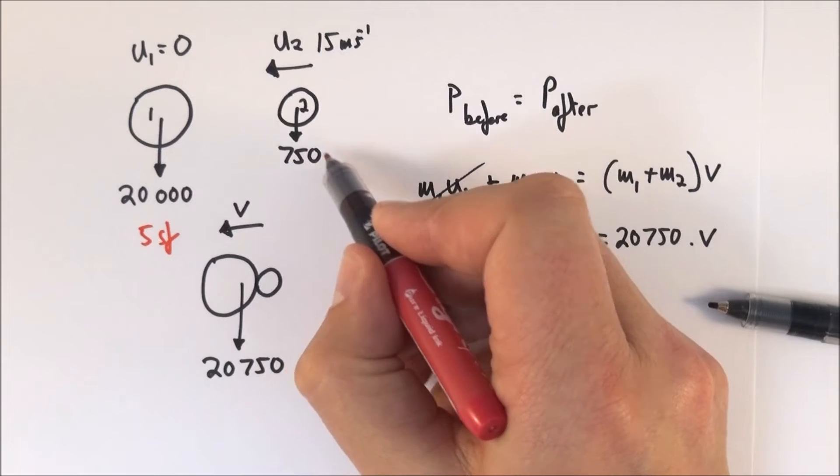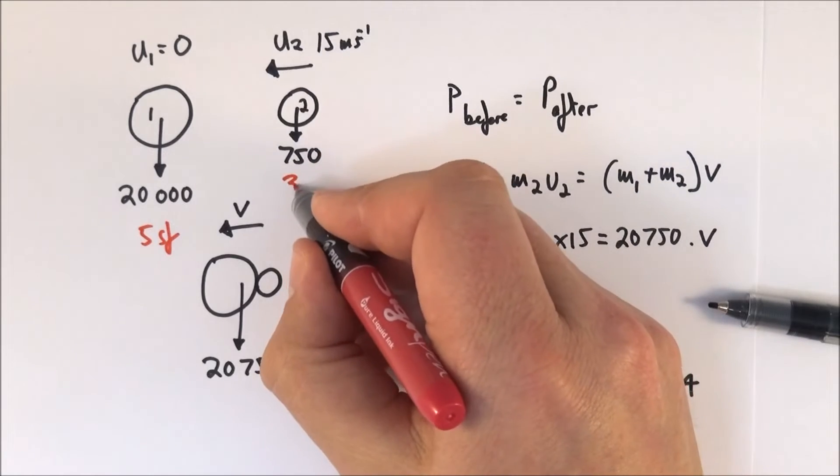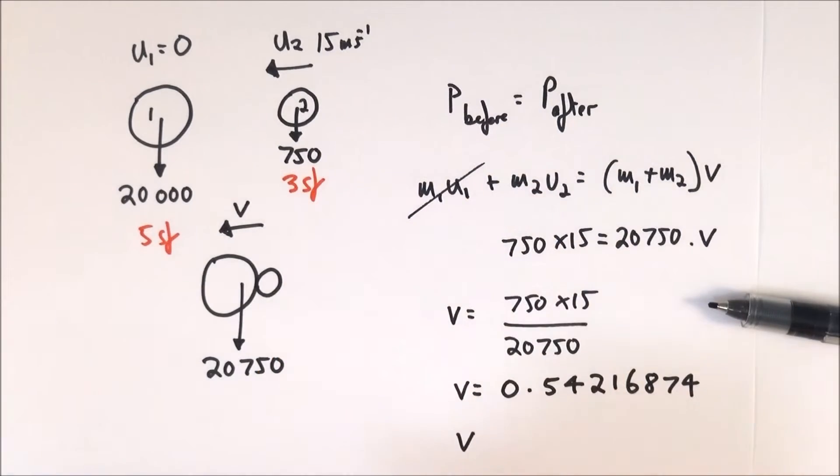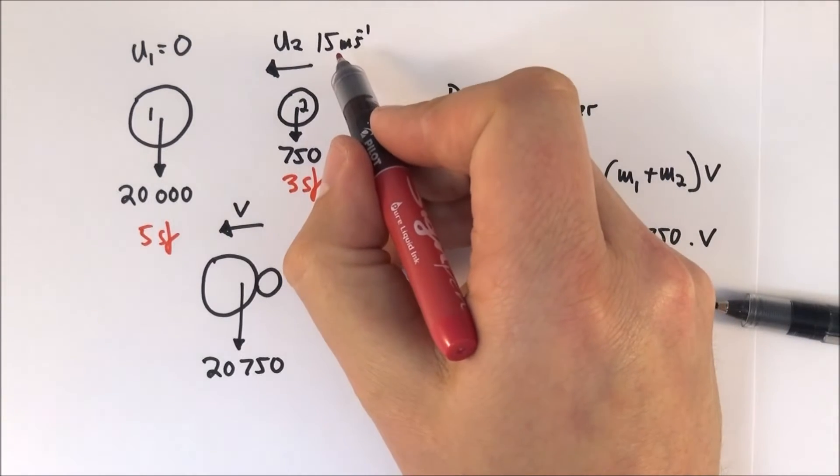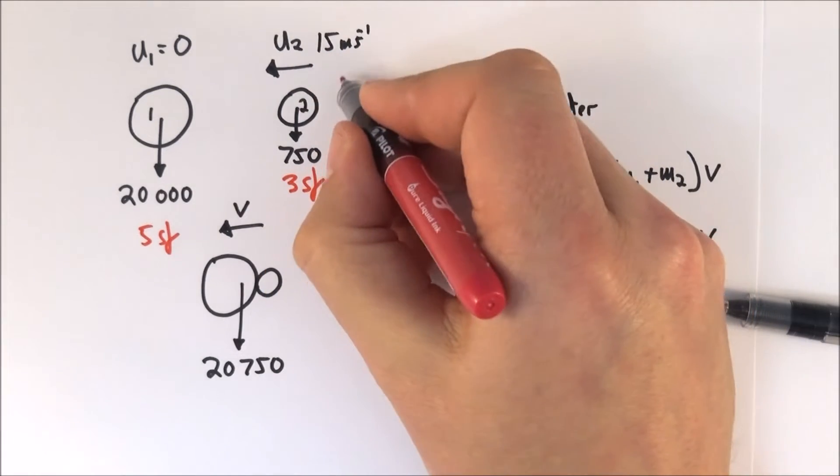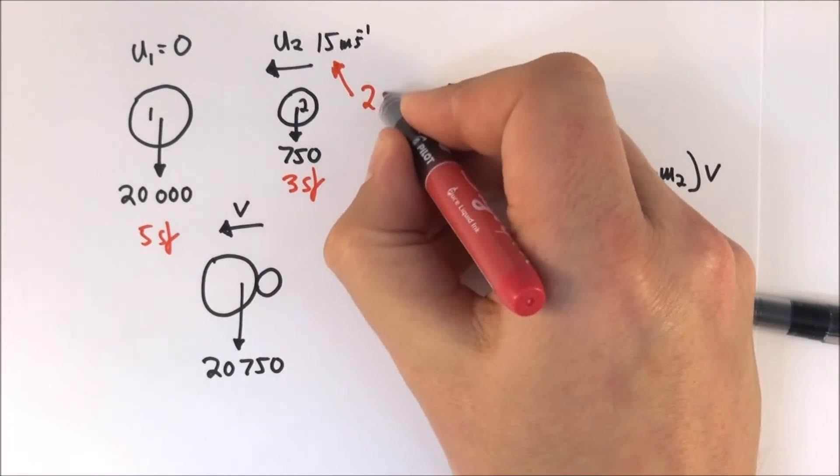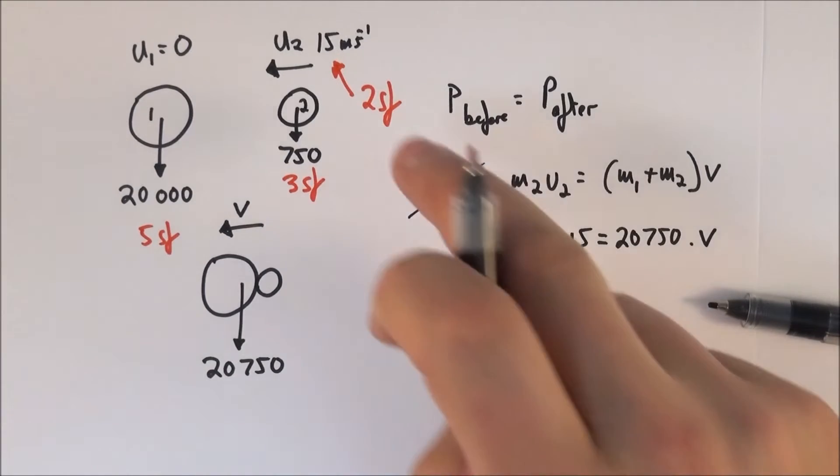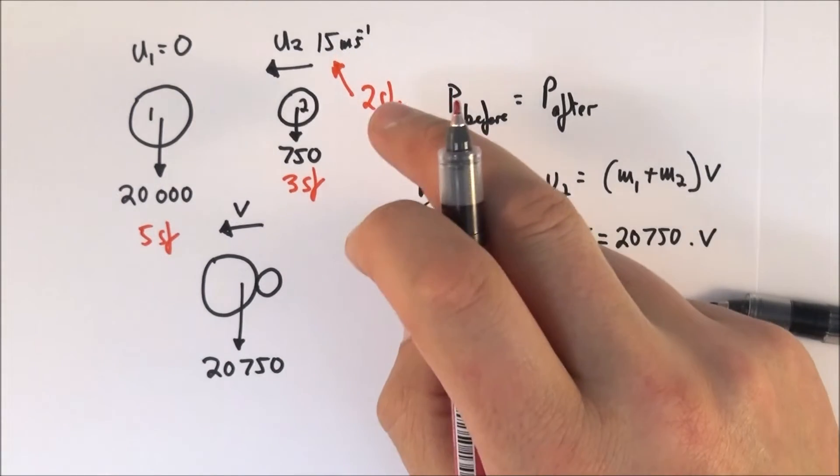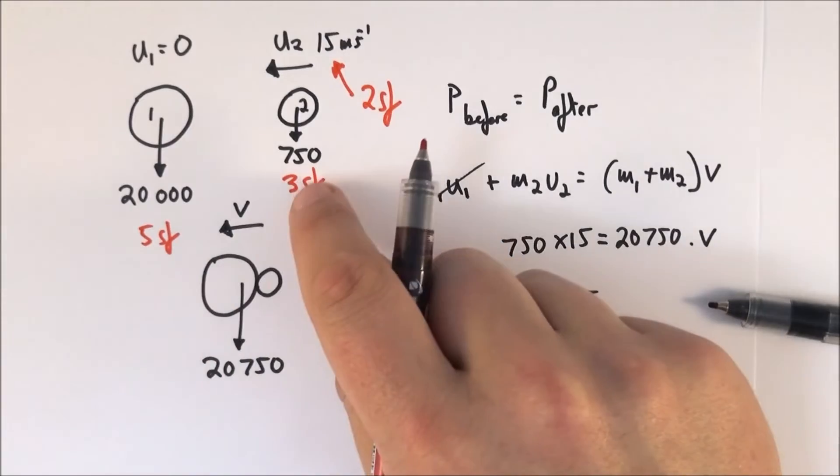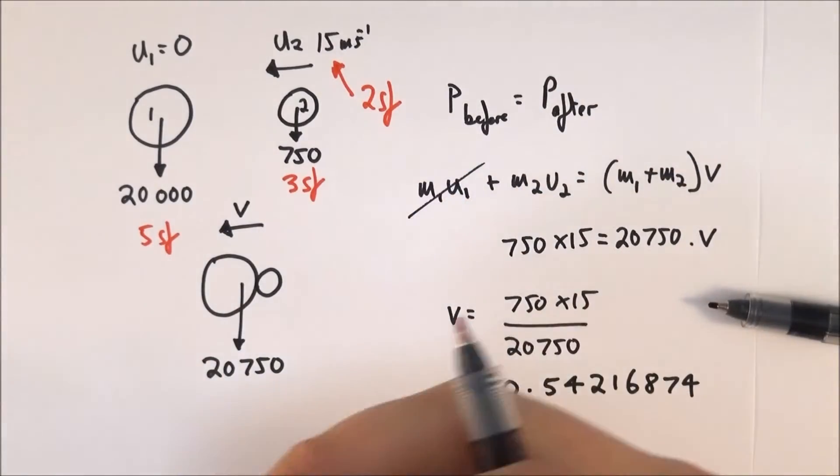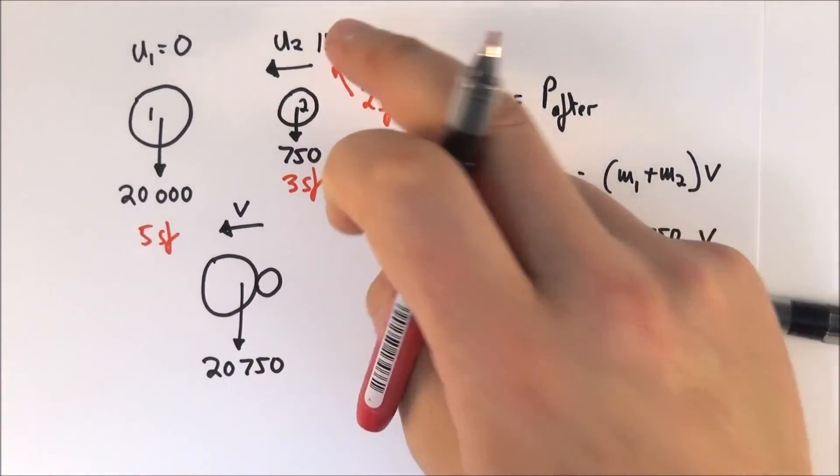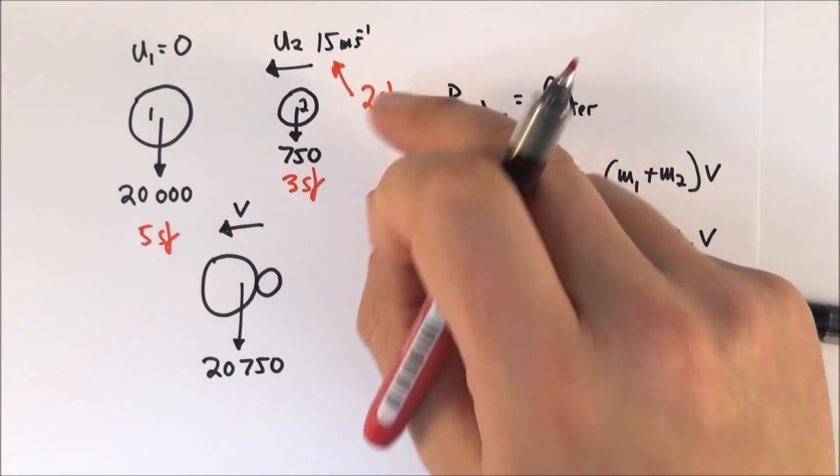This data here, 750, has a trailing zero, so that's three significant figures. But the speed, 15 meters per second, has been given to two significant figures. Now the way we deal with this in physics is that we can only justifiably give our final answer to the least amount of significant figures in our raw data. So we can only give our final answer to two significant figures.